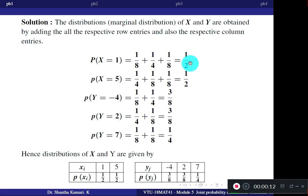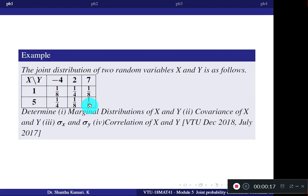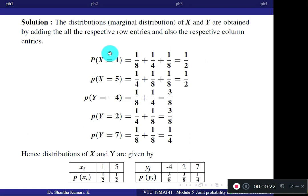Similarly, P(X=5) — adding the three entries in front of X equal to 5 — gives you 1/2. When you have only two values of X and one probability is known, the other can be determined because the sum of all probabilities must equal 1. So if one is 1/2, the remaining must also be 1/2.